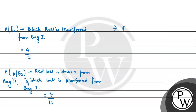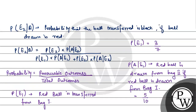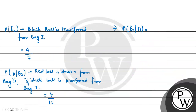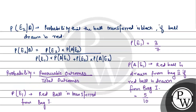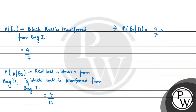So, this gives us the probability of E2 given A equals: (4 by 7) multiplied by (2 by 5), all divided by [(3 by 7) multiplied by (1 by 2)] plus [(4 by 7) multiplied by (2 by 5)].